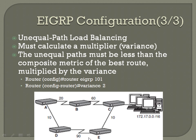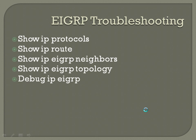For EIGRP troubleshooting: 'show ip protocols', 'show ip route' — incredibly important for all routing — or 'show ip route' followed by a specific network IP to trace a particular destination. Use 'show ip eigrp neighbors' to see your neighbor table and 'show ip eigrp topology' to see the EIGRP topology table. If you're really stuck, 'debug ip eigrp' will help. Make sure you turn debugs off when done — use 'undebug all' — because it takes up a lot of router resources.